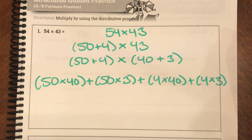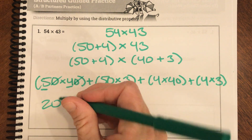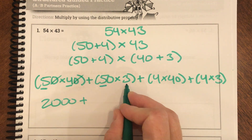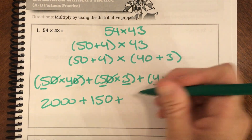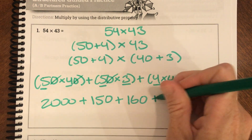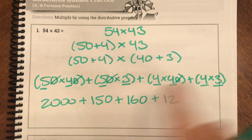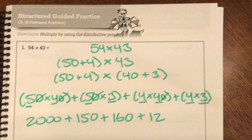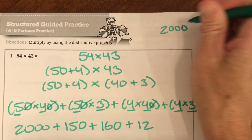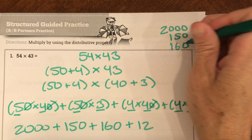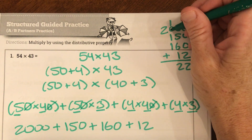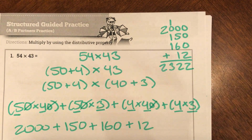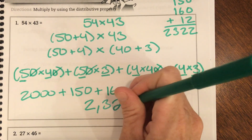Now let's solve using the zero trick. 5 times 4 is 20, add two zeros: 2,000. Plus 5 times 3 is 15, add one zero: 150. Plus 4 times 4 is 16, add one zero: 160. Plus 4 times 3 is 12. We have four partial products: 2,000, 150, 160, and 12. Adding them: 2,000 plus 150 plus 160 plus 12 equals 2,322 as our final product.